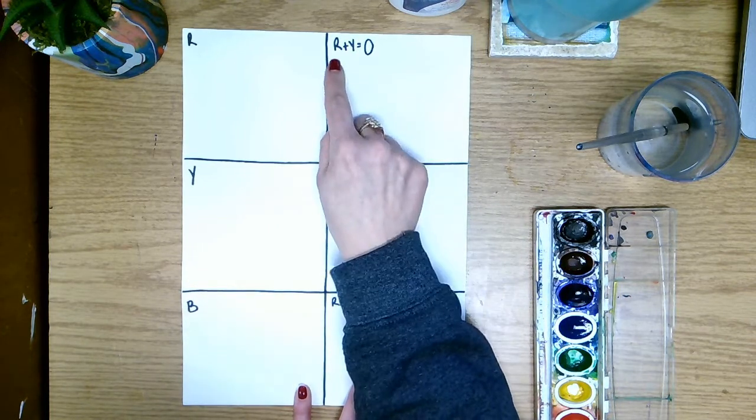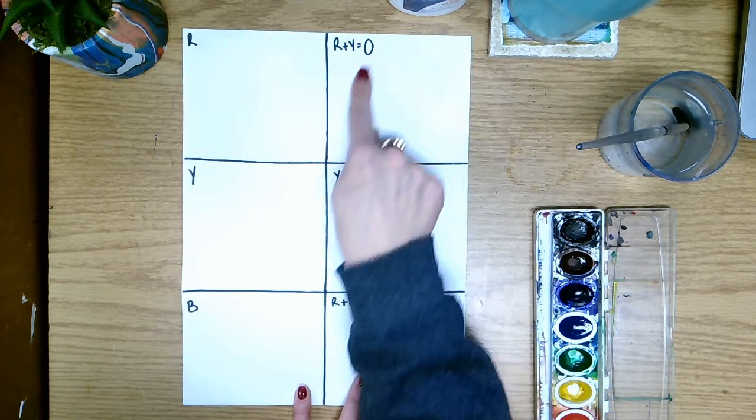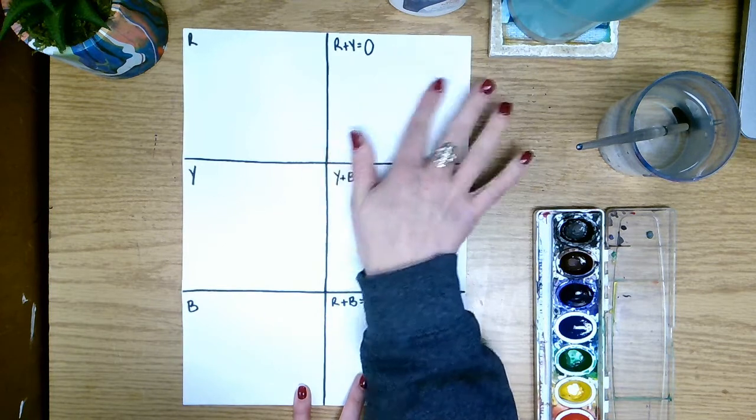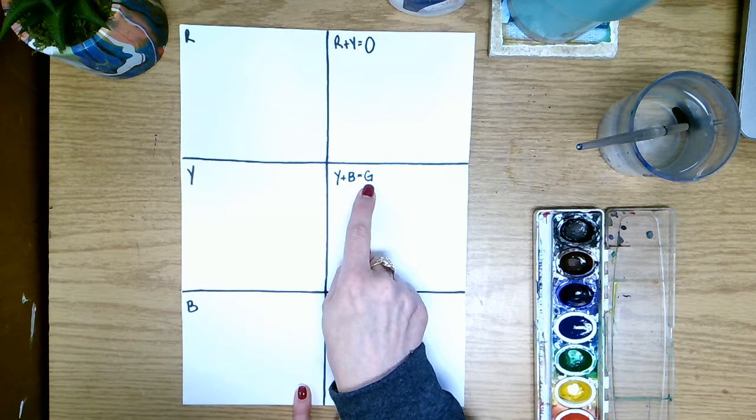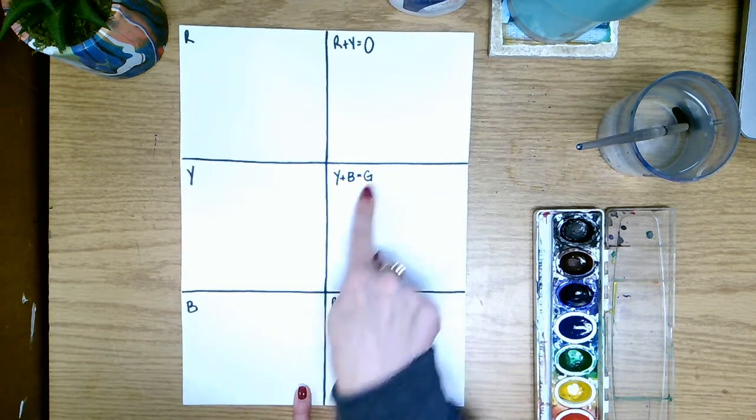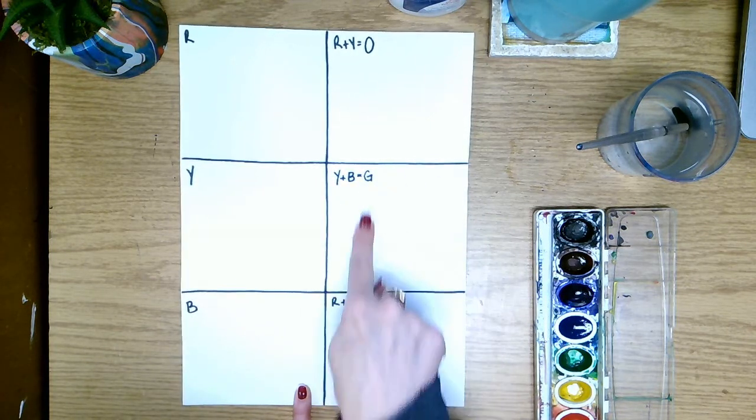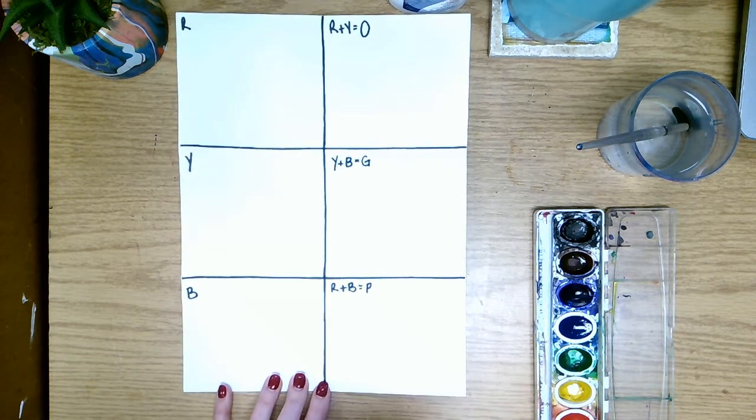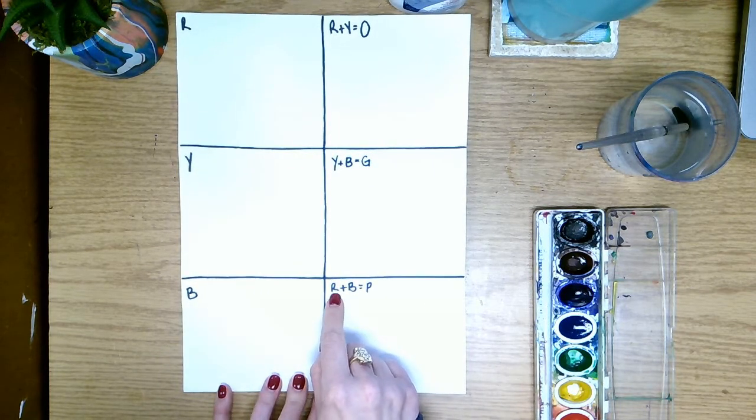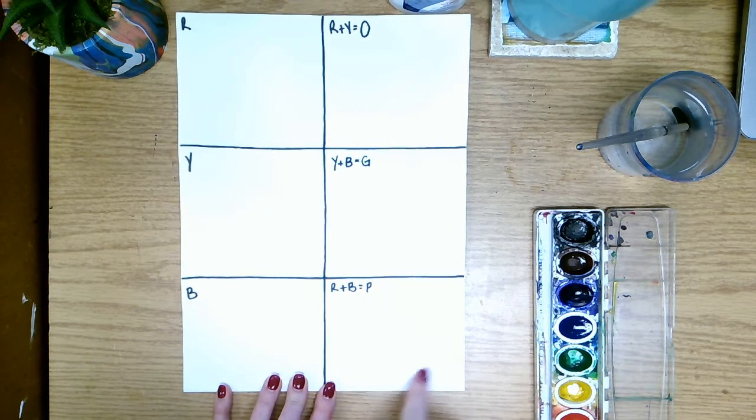So we will be using red and yellow mixed together which will make orange and we'll paint in this square with orange. Yellow and blue equal green so we will use yellow and blue here to make green in this square. And then on the last one we have purple. We will use red and blue mixed together to make purple.